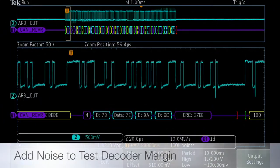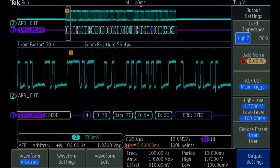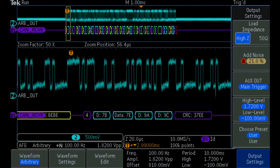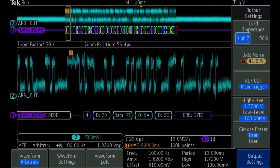As we add noise to the serial signal coming from the MDO3000's AFG, we begin to see data packets disappearing, indicating bit errors. This testing indicates the noise margin in our receiver design.